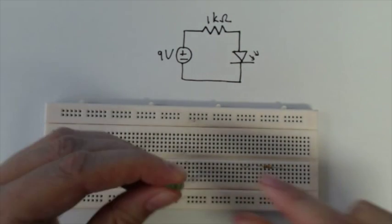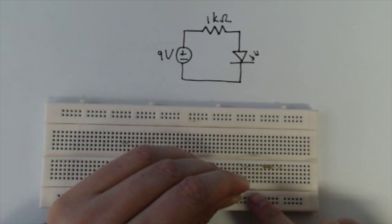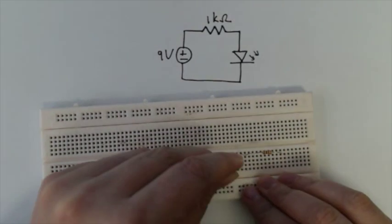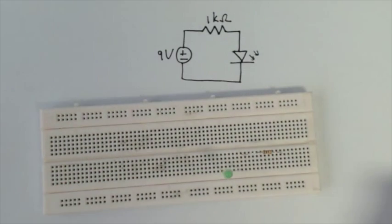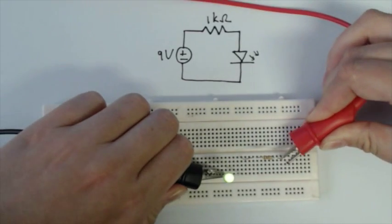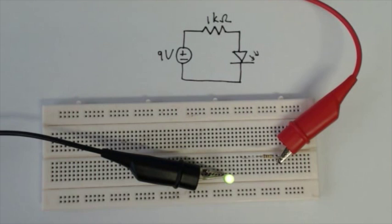Again, make sure that the long leg is the positive side. Plug it into the same row. You can see I'm putting it right up to the end there, and another row at the other end. Now we can connect our power. And we can see the LED goes on, which says that we built it correctly.